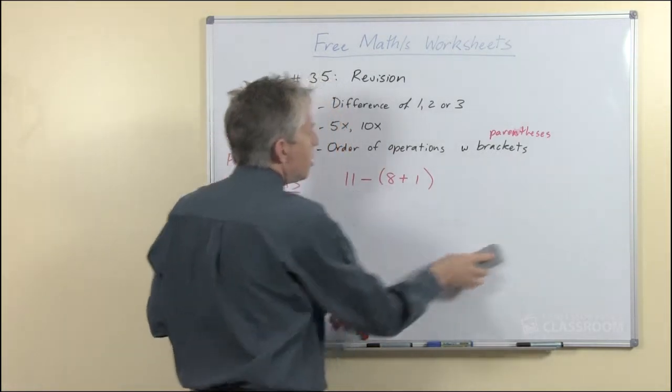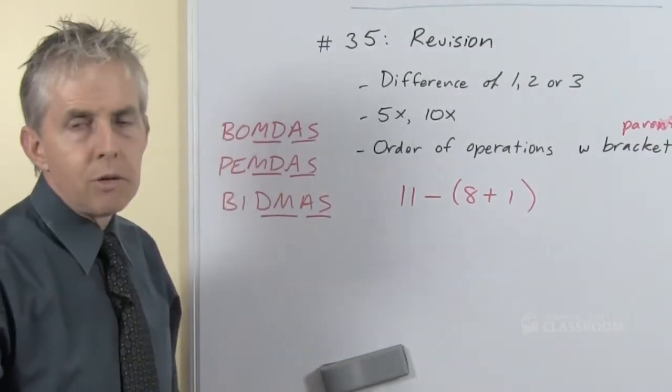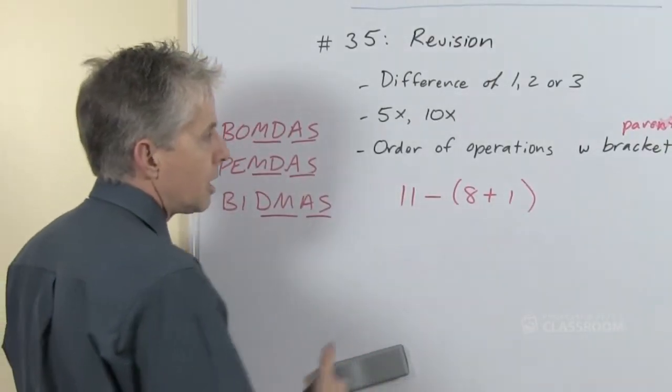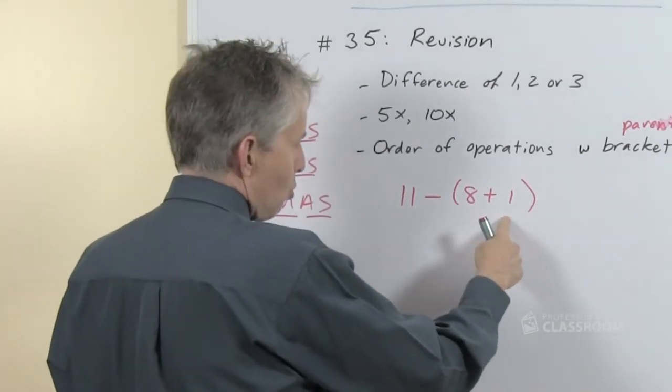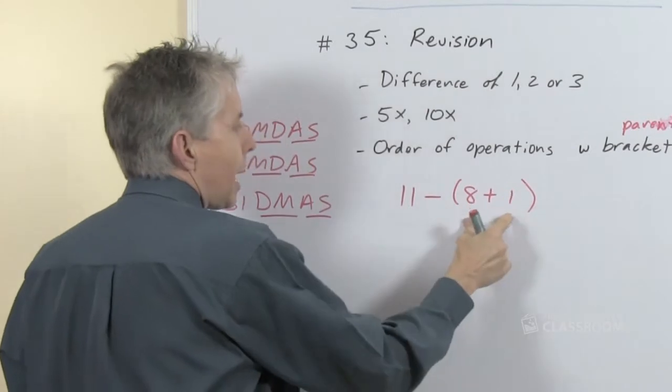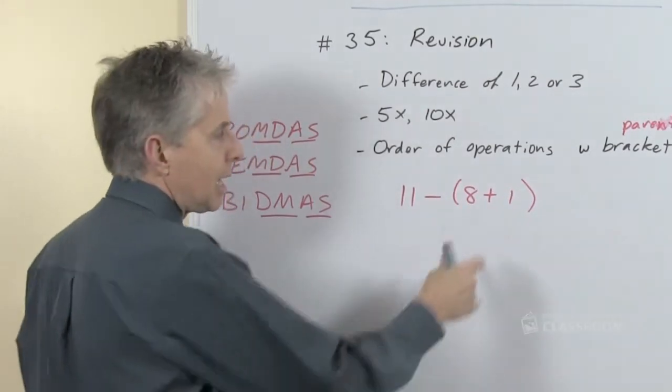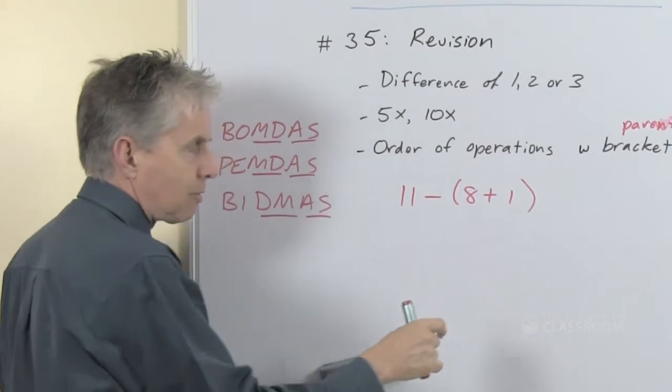In this example here you can see that the parentheses make a difference. If we didn't have them the answer would be different. So eleven take away eight is three plus one is four, but if we add the eight and the one first getting nine, eleven take away nine is two. So it does make a difference.